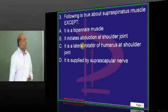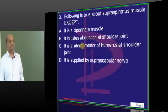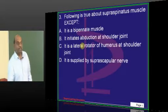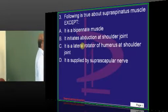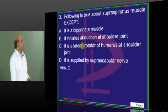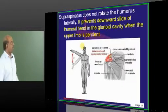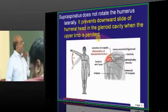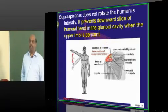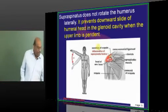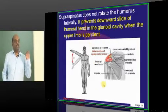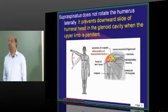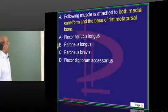Then supraspinatus, what is its main function? Shoot one possible answer quickly. So it is bipennate, it causes abduction, but it is not a lateral rotator. What is its main function, doctor? It will make our humeral head in the glenoid cavity from falling down to gravity. That is, it will lift our hand and keep it in the glenoid cavity. Supraspinatus is what you need to be quite sure.